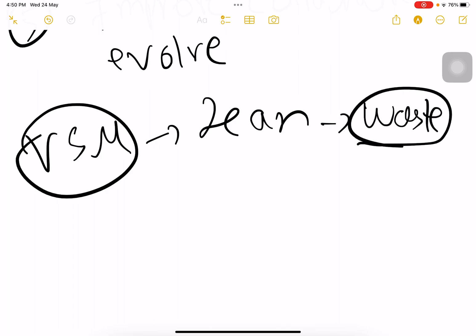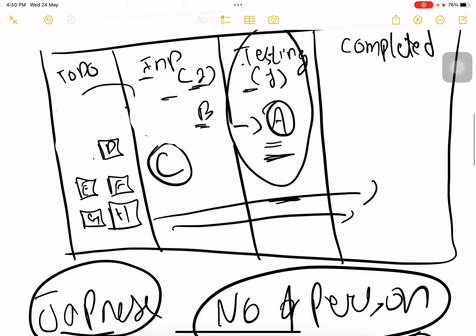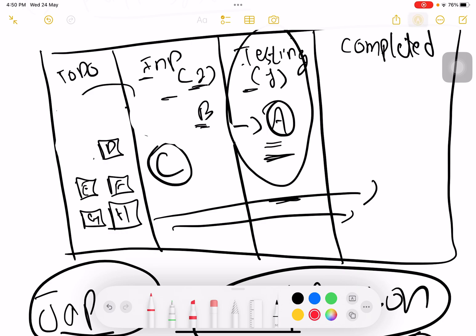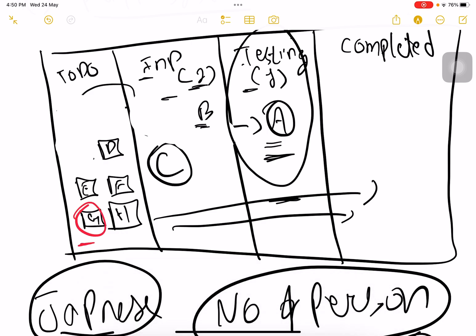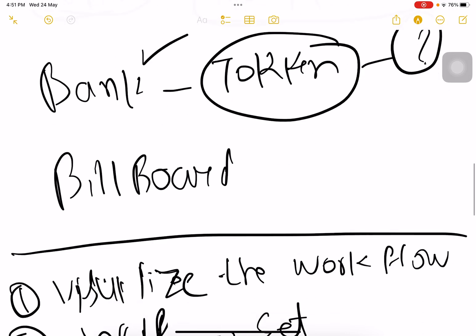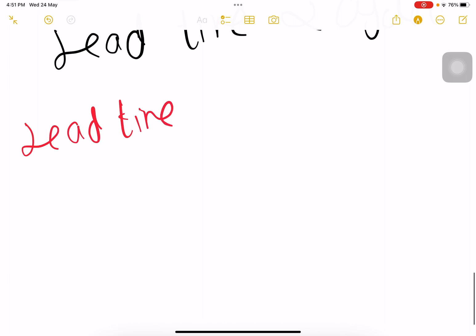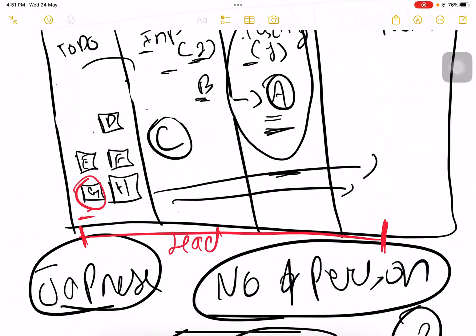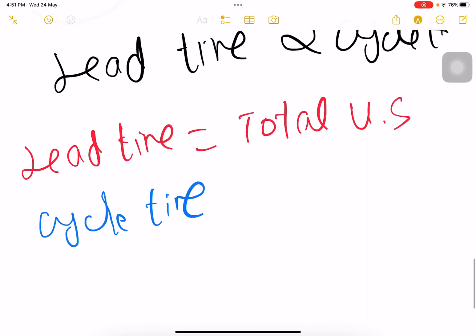What do we do? We consider lead time as well as cycle time. Lead time is when the user story was requested to when it was completed - total time of a user story. Cycle time is when the team started working on it to when it was completed. So which one is greater - lead time or cycle time?